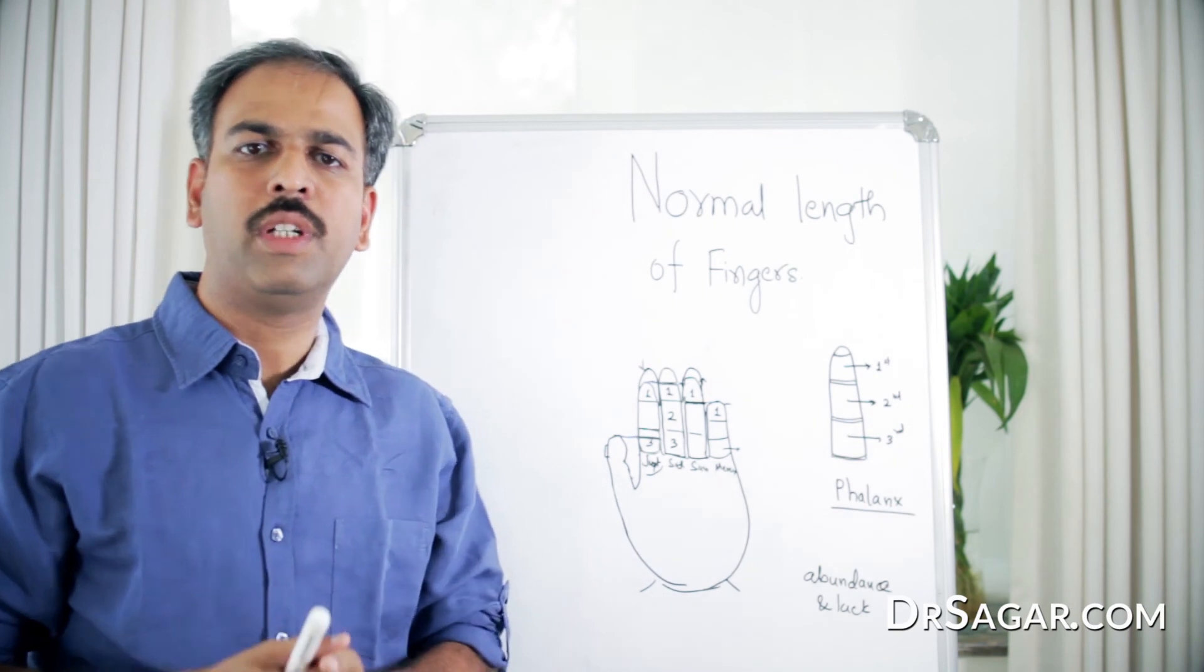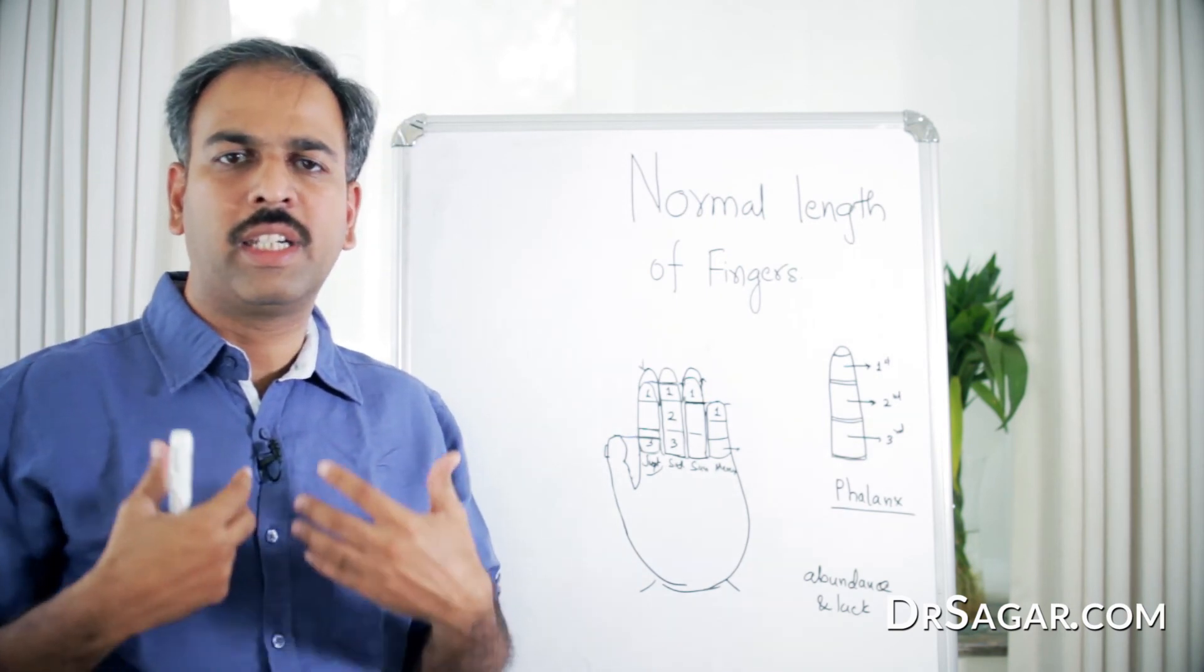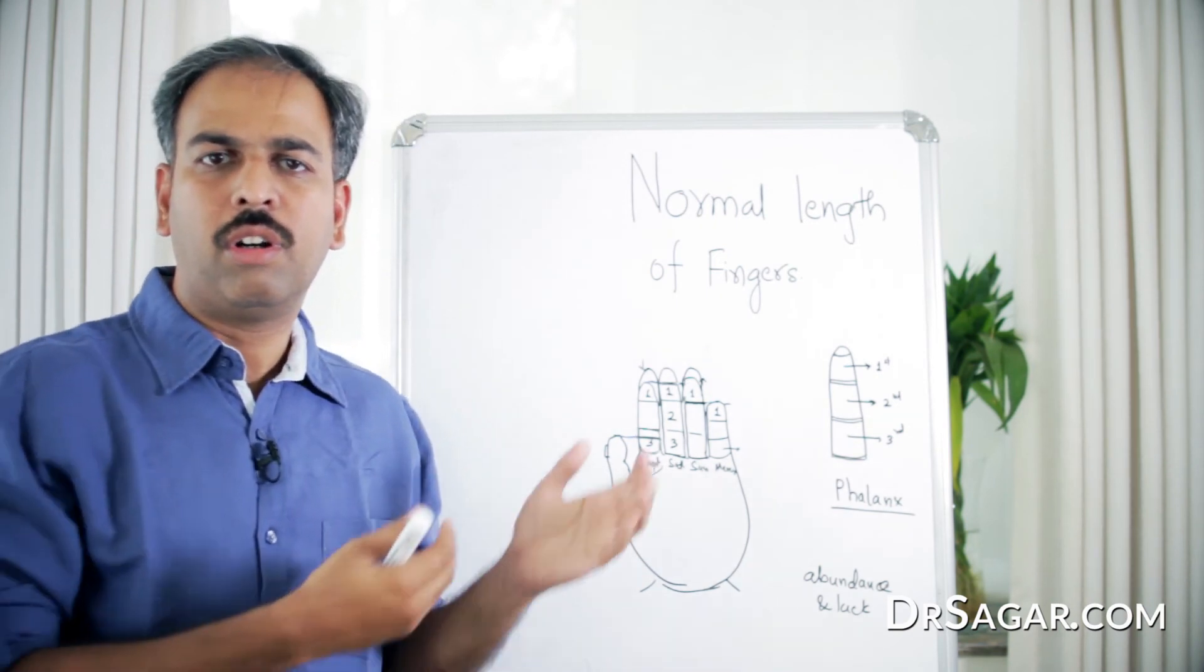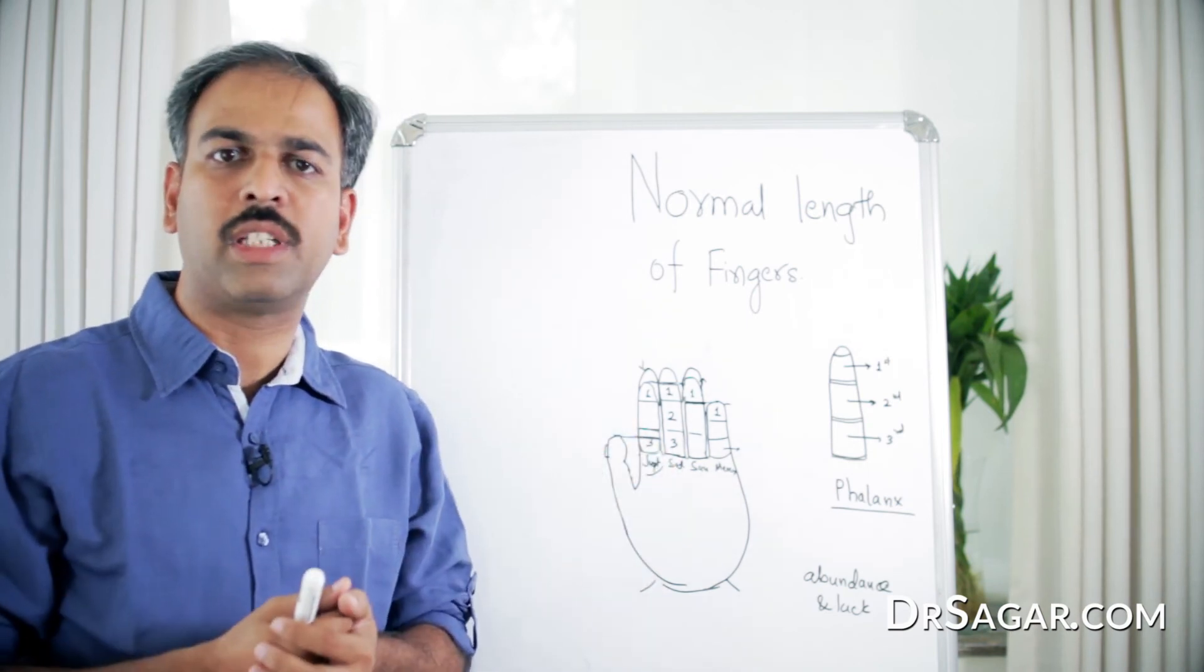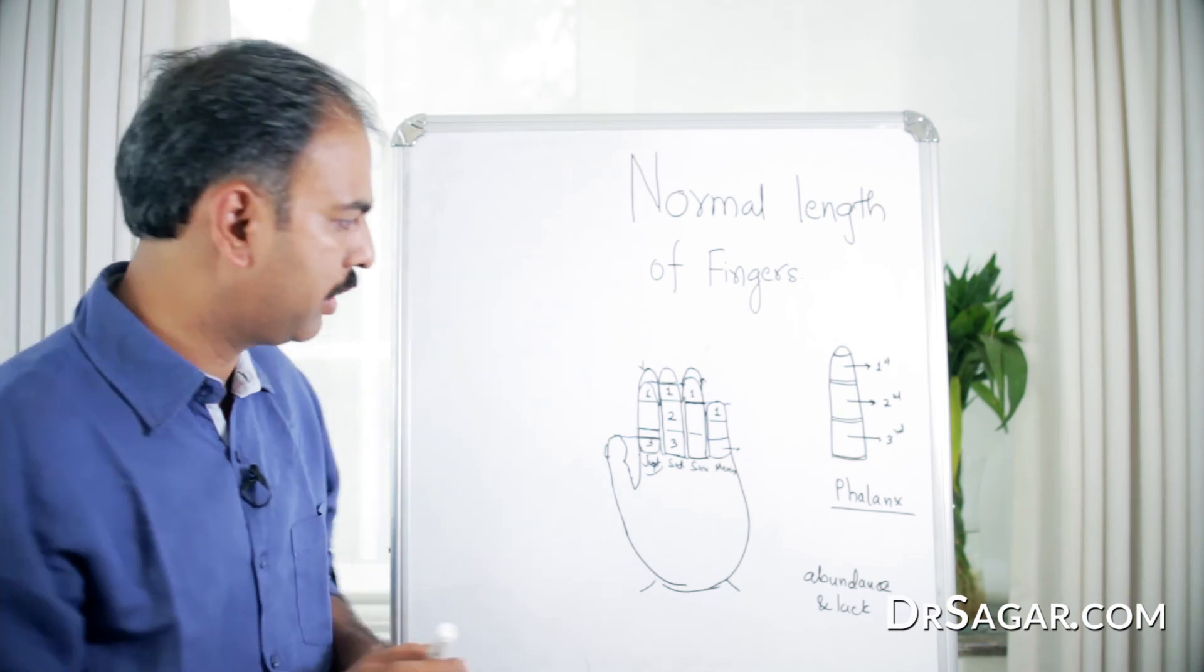If the tip of the ring finger goes above its normal scale, the gambling tendencies of the person, which is related to ring finger or which is related to Sun, may increase.